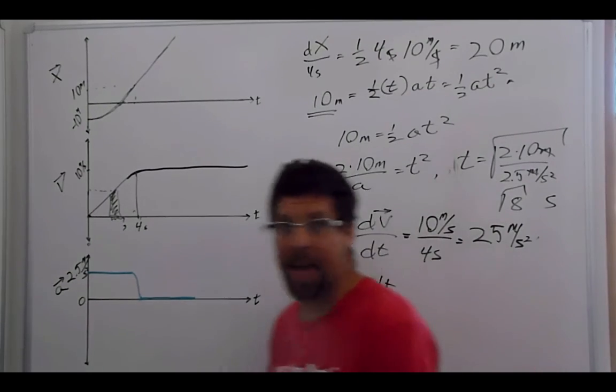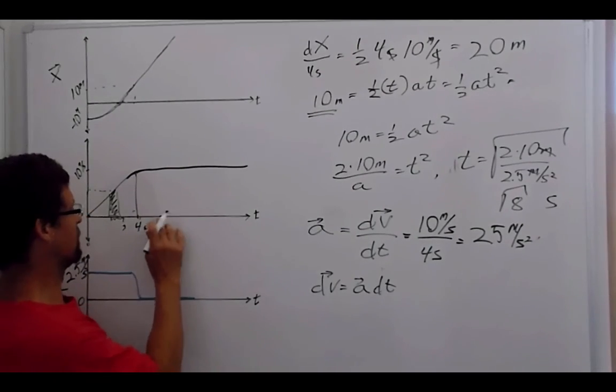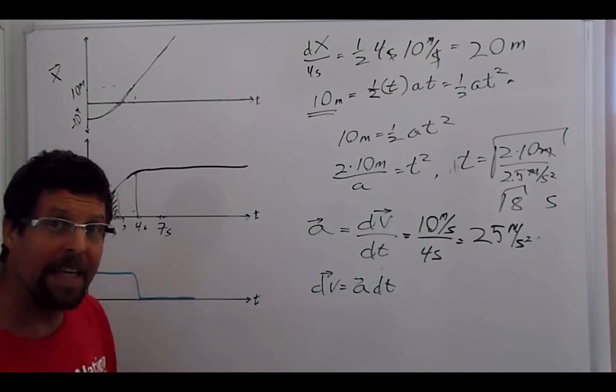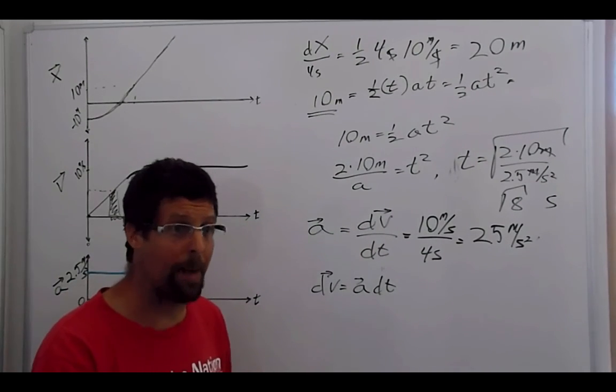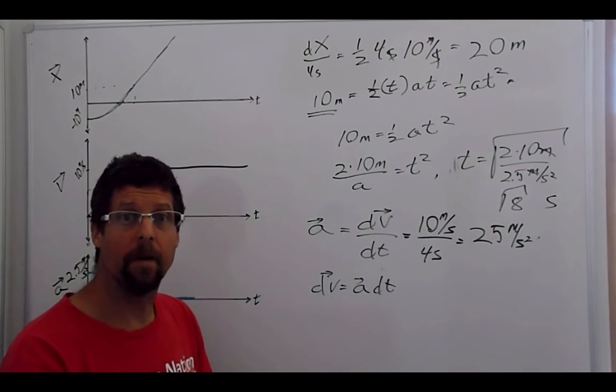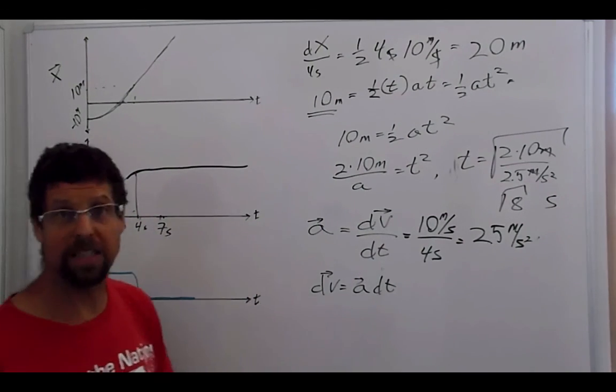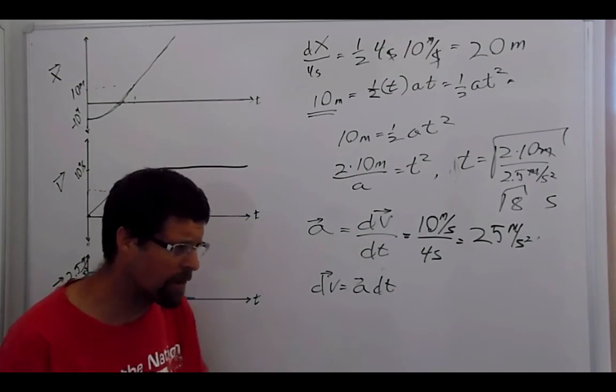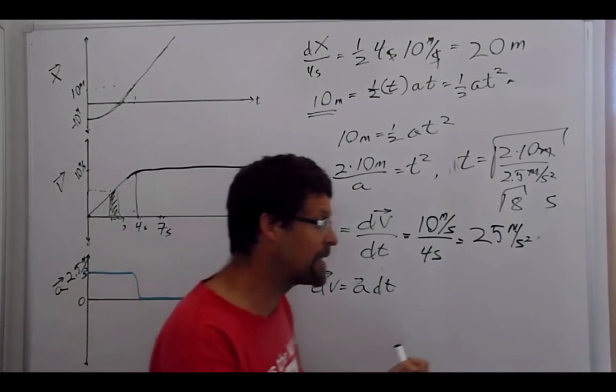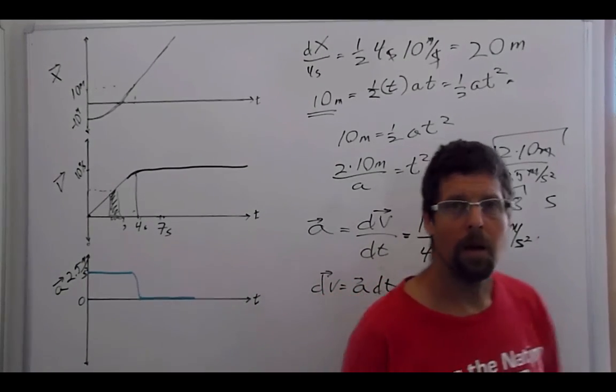Let's say we ride along for three more seconds. So now I'm at seven seconds. And then in two seconds, I come to a stop. I see a car, and I come to a stop with constant acceleration. Can you draw, can you extend these graphs all the way up to where I stop? Again, what does that look like? I start, I'm accelerating, I get up to a constant speed, I stop. See you tomorrow.